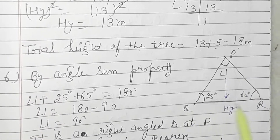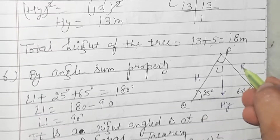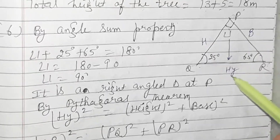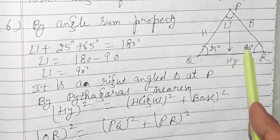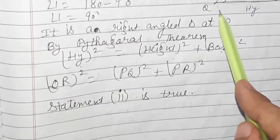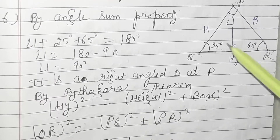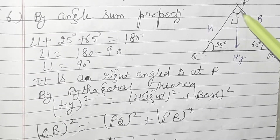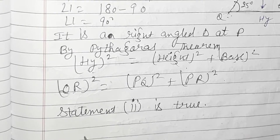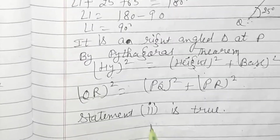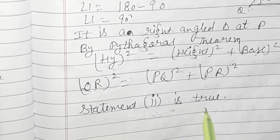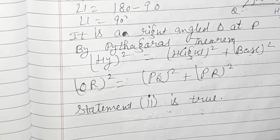The side opposite to 90° is the hypotenuse, which is QR. PR is the base and PQ is the height. I will apply Pythagoras theorem: QR² = PQ² + PR². Comparing with the three statements given in the book, my answer matches the second statement. Therefore, statement 2 is true — that is the answer to this question.